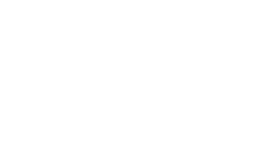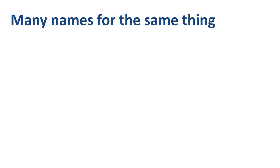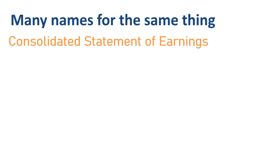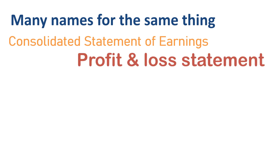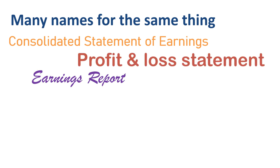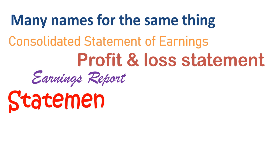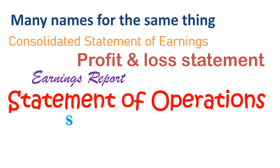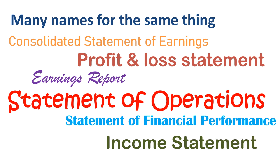The income statement is known under many names, each of which gives a hint of what we are trying to review in this income statement tutorial: consolidated statement of earnings, profit and loss statement, earnings report, statement of operations, statement of financial performance, or simply the income statement. So in case you are unable to find the income statement for a company, try a search with any of these other names.